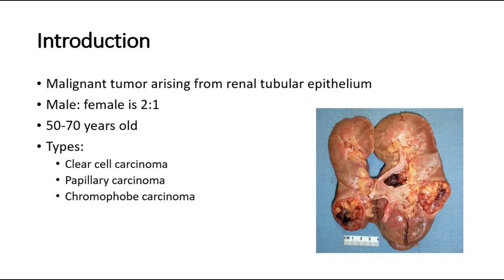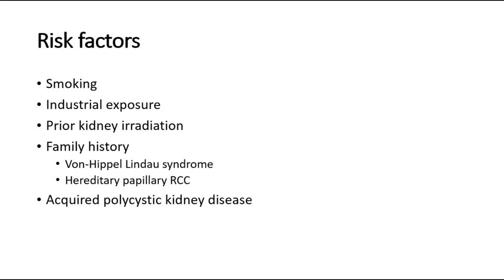Risk factors that increase a person's chance of having renal cell carcinoma include smoking, which doubles the risk, and industrial exposure to elements such as cadmium. Other risk factors include prior kidney irradiation, a family history of von Hippel-Lindau syndrome or hereditary papillary renal cell carcinoma, and acquired polycystic kidney disease secondary to chronic dialysis.